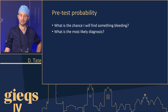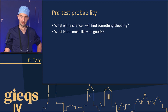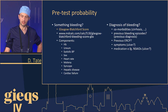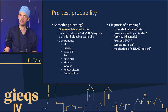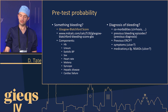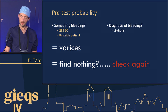Starting with pre-test probability: what is the chance I will find something bleeding, find a lesion, and what is the most likely diagnosis? You have the Glasgow Blatchford Score — validated tools that tell you the chance of there being something bleeding. If the patient has cirrhosis, maybe they've got varices, and so on. This is all very obvious but very badly done in practice, in my experience.